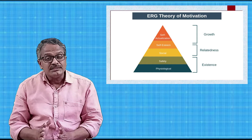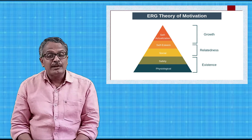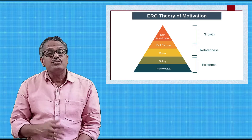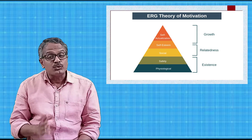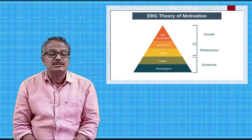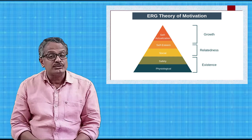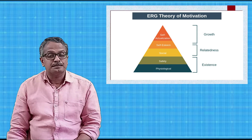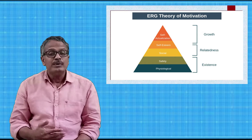Next is relatedness needs. Relatedness means relations with other human beings. This is the need for socialization, interpersonal relations, and human interactions. It is the need for friendship and love. It may also be the need for maintaining better relations with family, friends, superiors, and subordinates. Relatedness needs also include the desire for getting social acceptance. People with relatedness needs desire for better positions and status in society. When compared with Maslow's theory, Maslow's social needs fall under this category, and some elements of esteem needs such as desire for social acceptance and status are also part of relatedness needs.